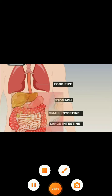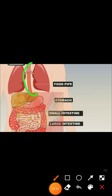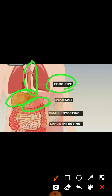Now, where does the food go? It goes through the food pipe. Here you can see the food pipe — food comes from the mouth into the food pipe, and the food pipe leads to the stomach. In the stomach, digestive juices and enzymes are mixed with the food, which breaks it into smaller parts.